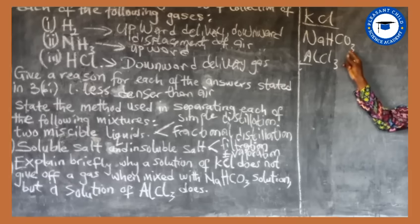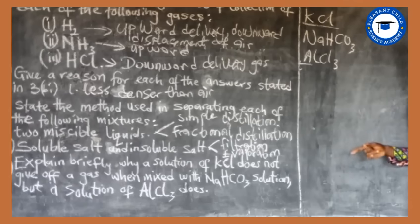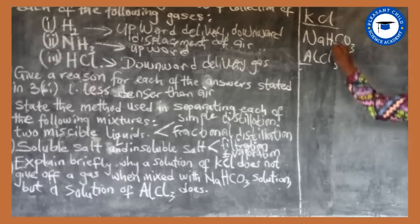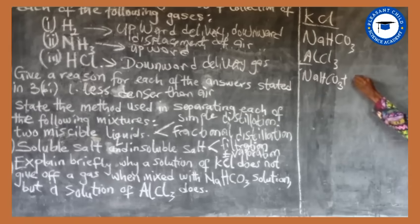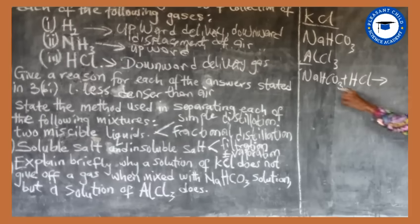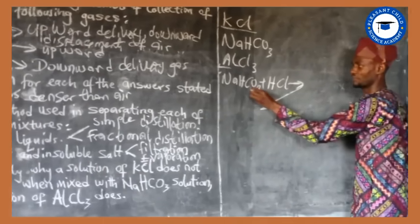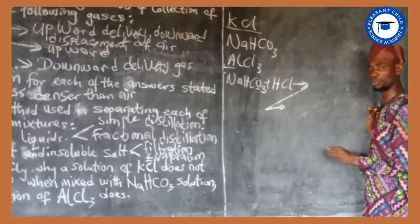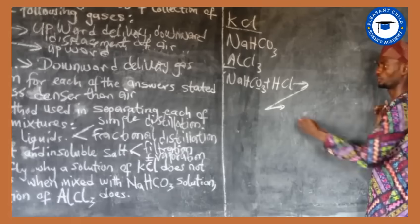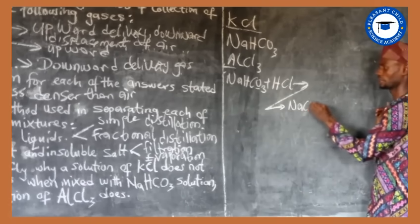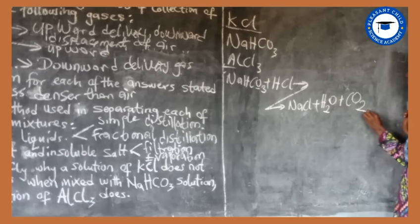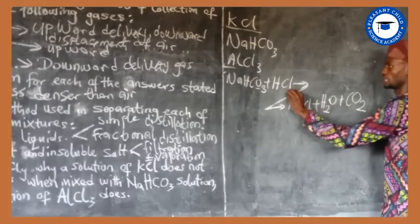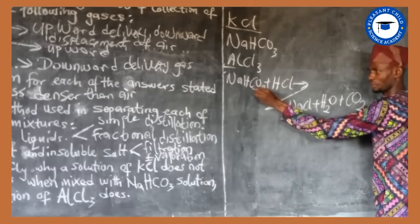For example, if you have NaHCO3 and add hydrochloric acid, the reaction gives off a colorless, odorless gas that turns limewater milky — that gas is carbon dioxide. The products are NaCl, water, and CO2. The carbon dioxide comes from the CO3 group.